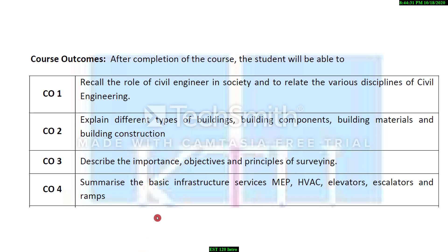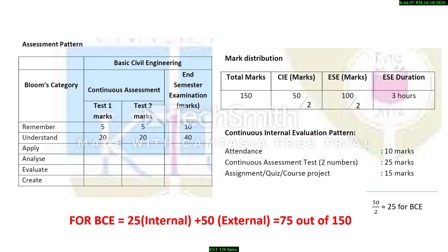Course outcome four is to summarize basic infrastructure services such as MEP — mechanical, electrical, and plumbing — as well as HVAC, elevators, escalators, and ramps, which are facilities provided for buildings.